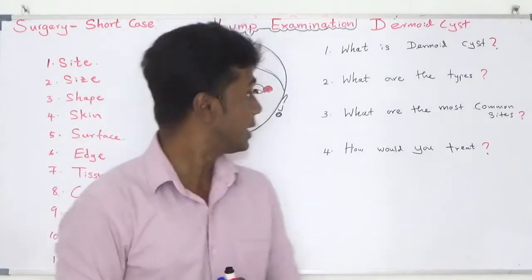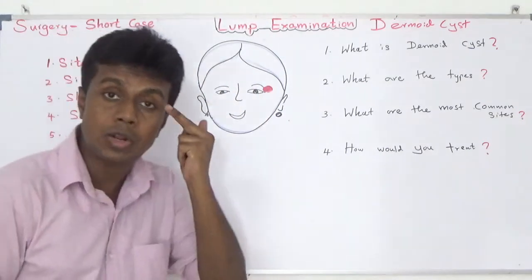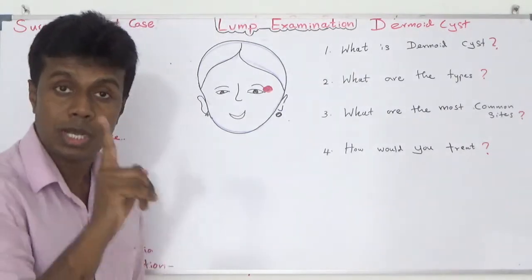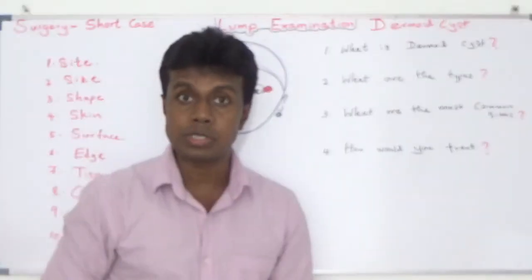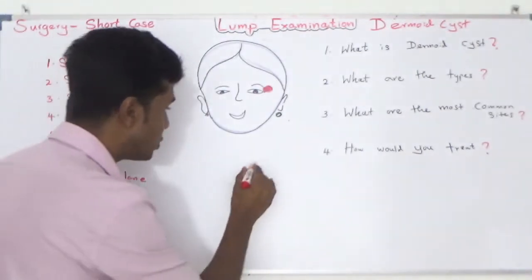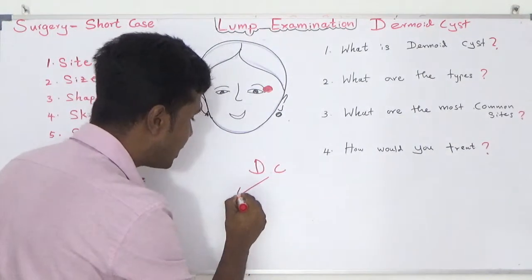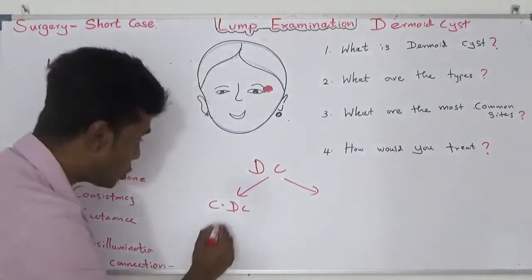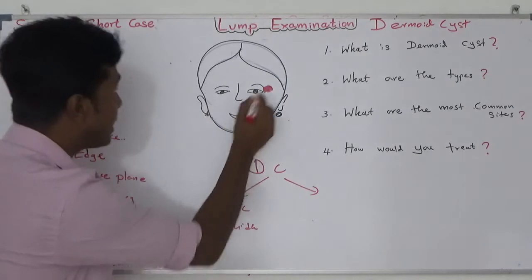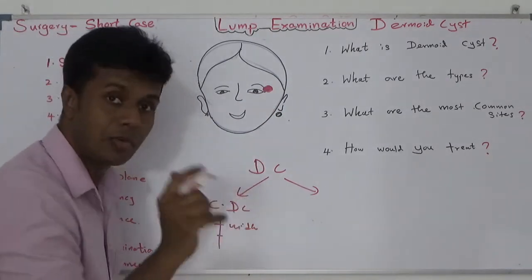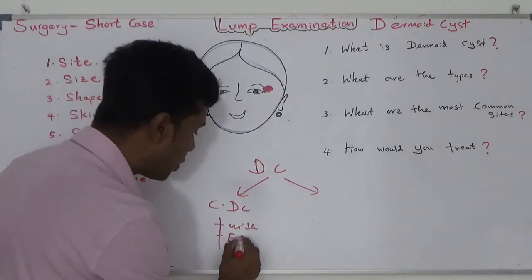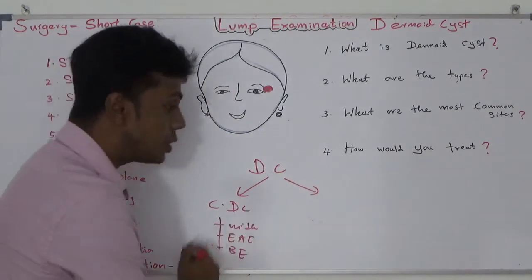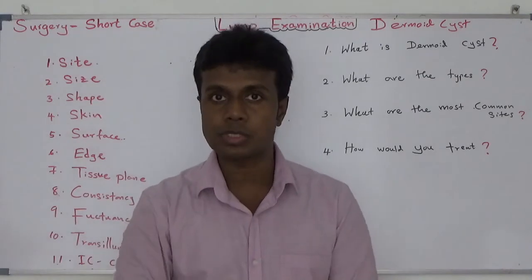In addition, dermoid cysts can present at the external angle of the eye and behind the eye. These are called congenital dermoid cysts. Dermoid cysts can be divided into two types. Congenital dermoid cysts are most common in the midline, external angle of the eye, and behind the ear.